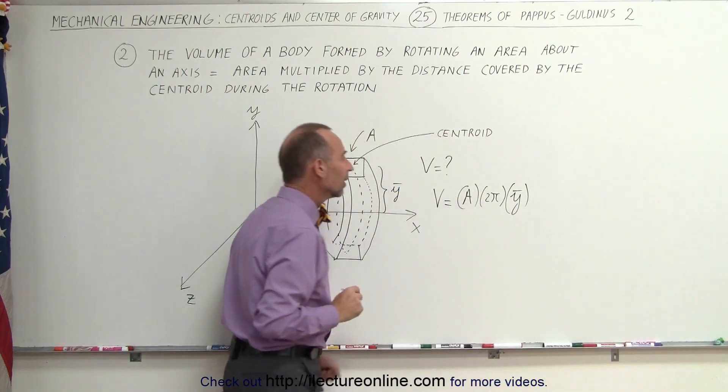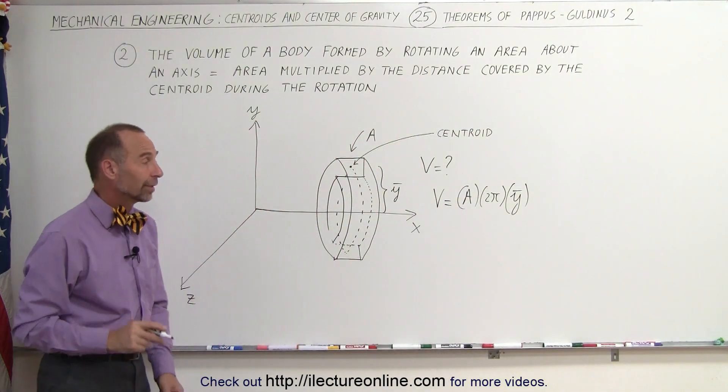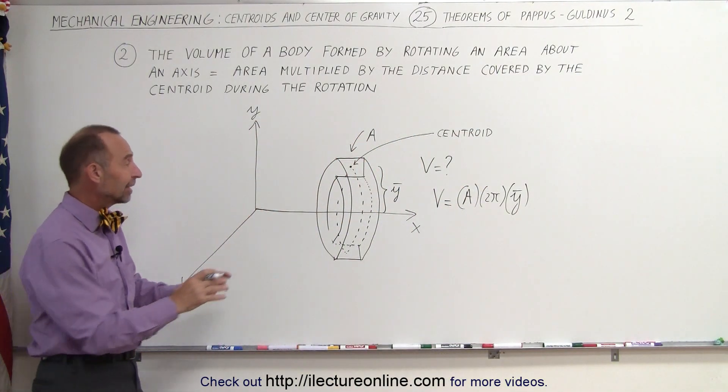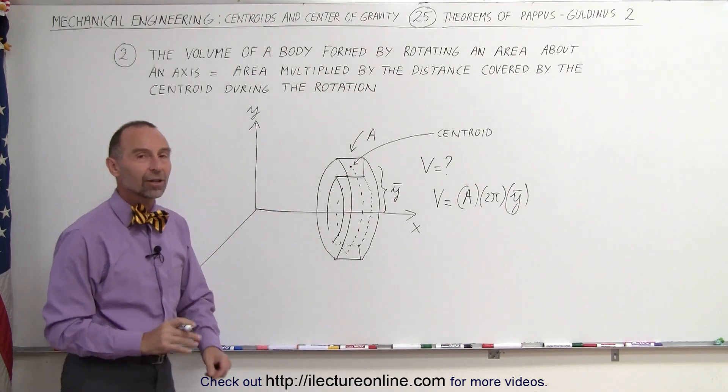So we multiply it times the y coordinate of the centroid and that is all we need to find the volume of this hollowed out cylinder.